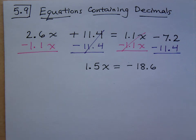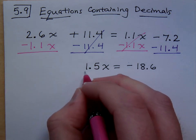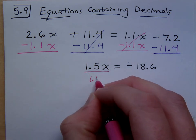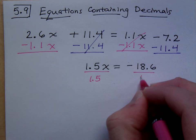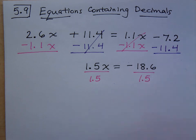Now how do I get x completely by itself? You divide by 1.5. I just divide by the coefficient which is 1.5. Do I divide by x? No, just divide by the coefficient.